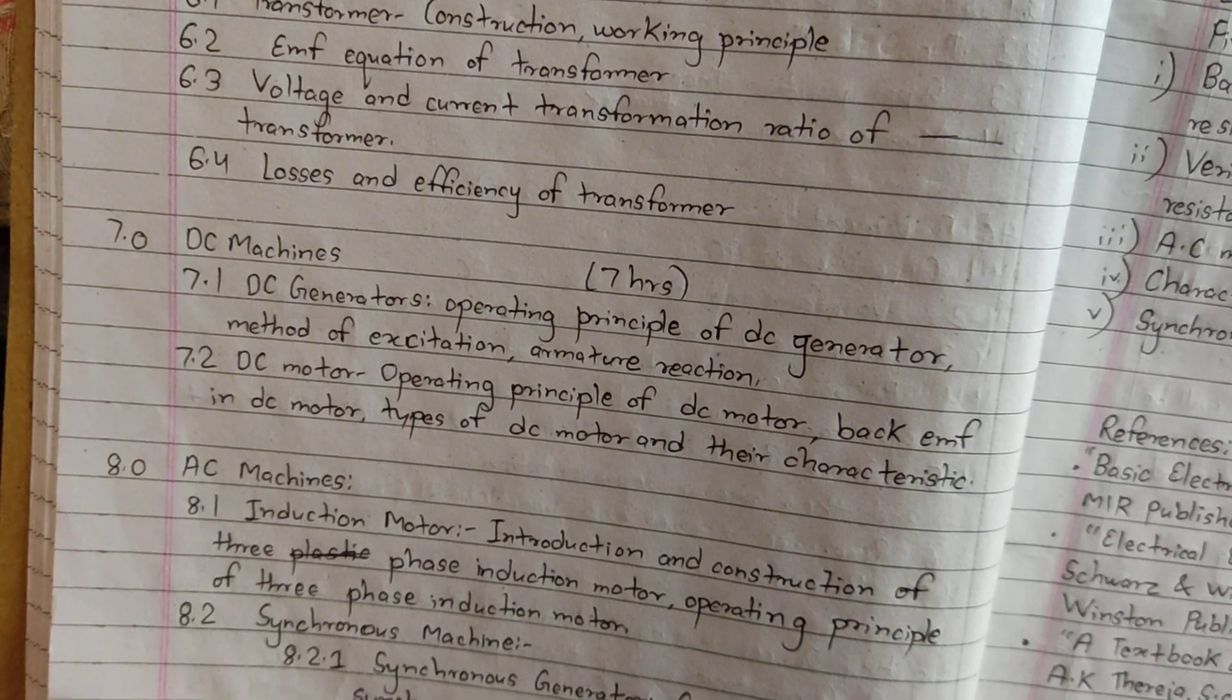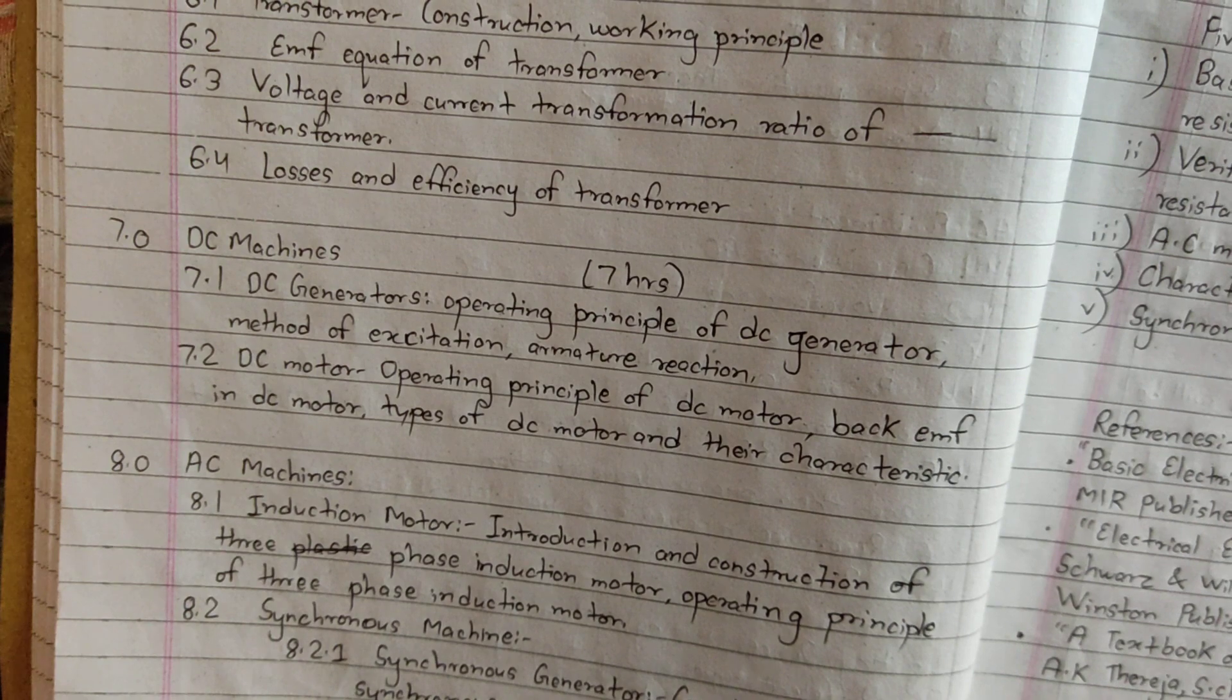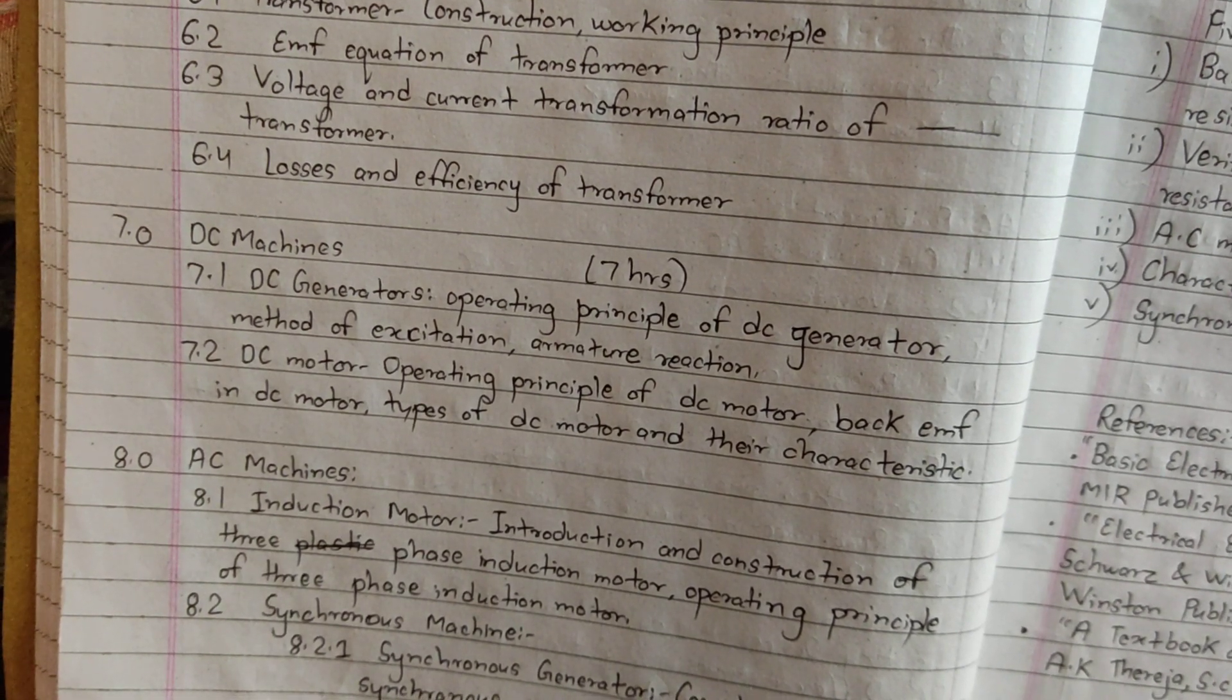This is the chapter 7 major DC machine. DC generators: operating principle of DC generator, method of excitation, armature reaction.